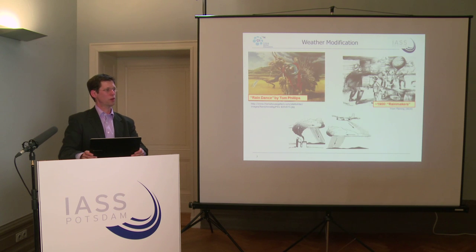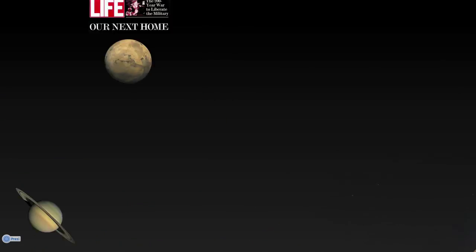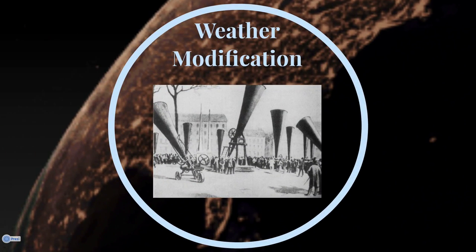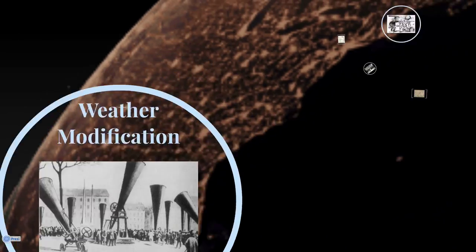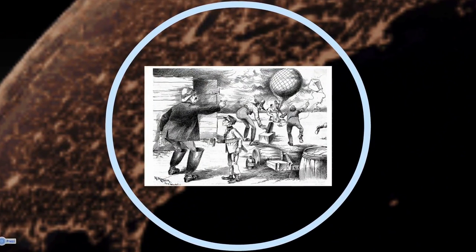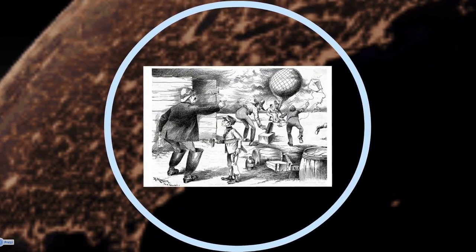But wanting to control our environment on a large scale is nothing new, dating back centuries to all sorts of attempts to control the weather, usually trying to either make it rain or trying to make it not rain at some specific place and time, with varying degrees of success.